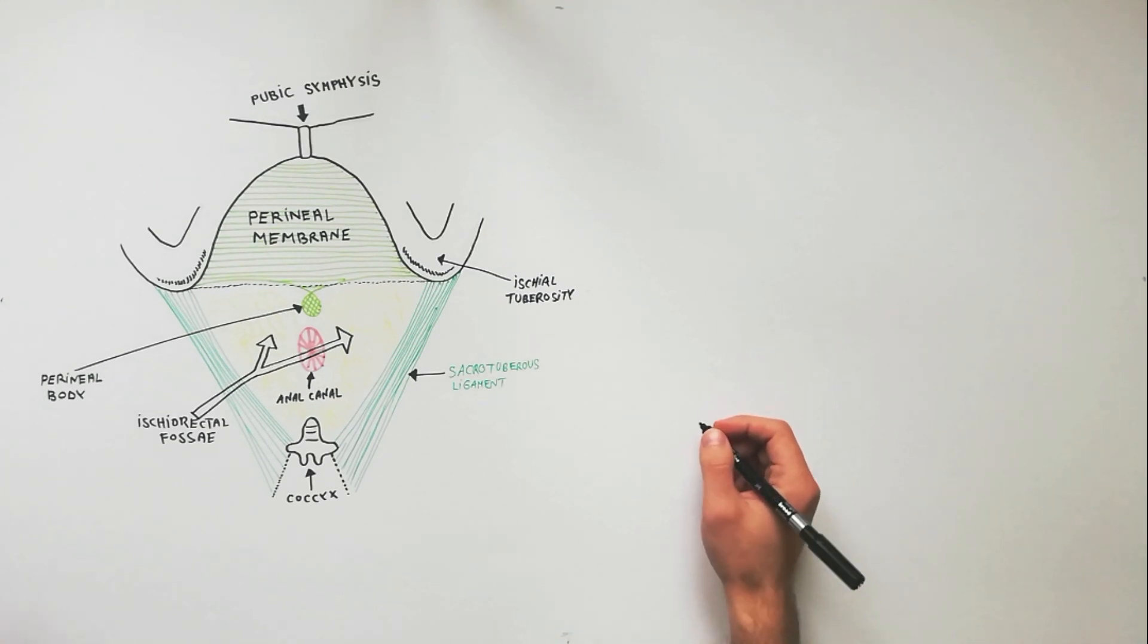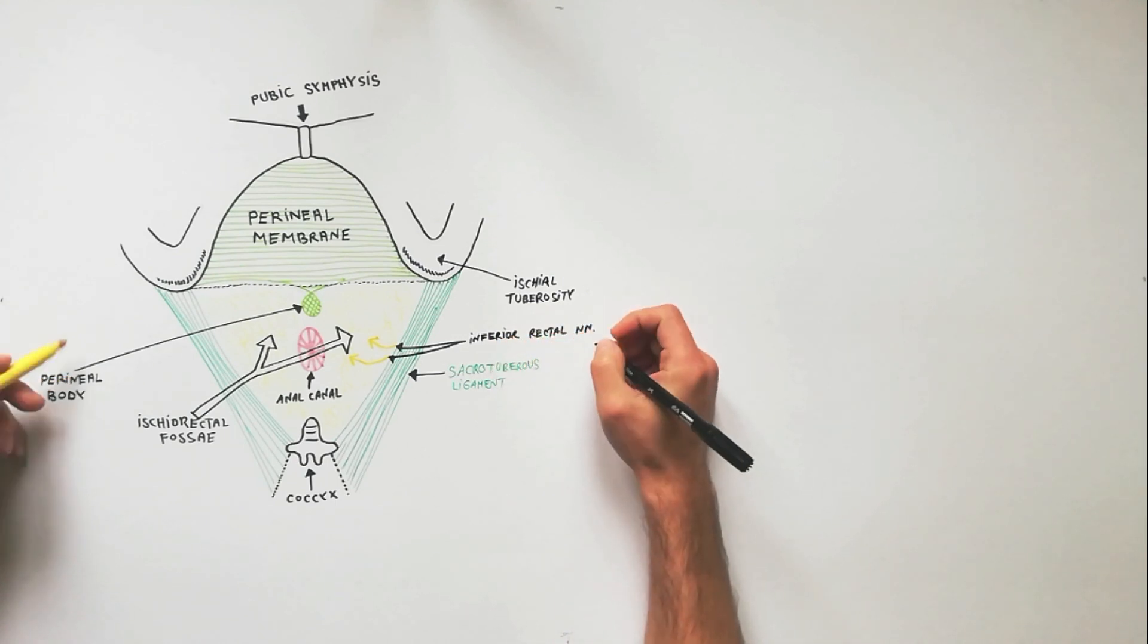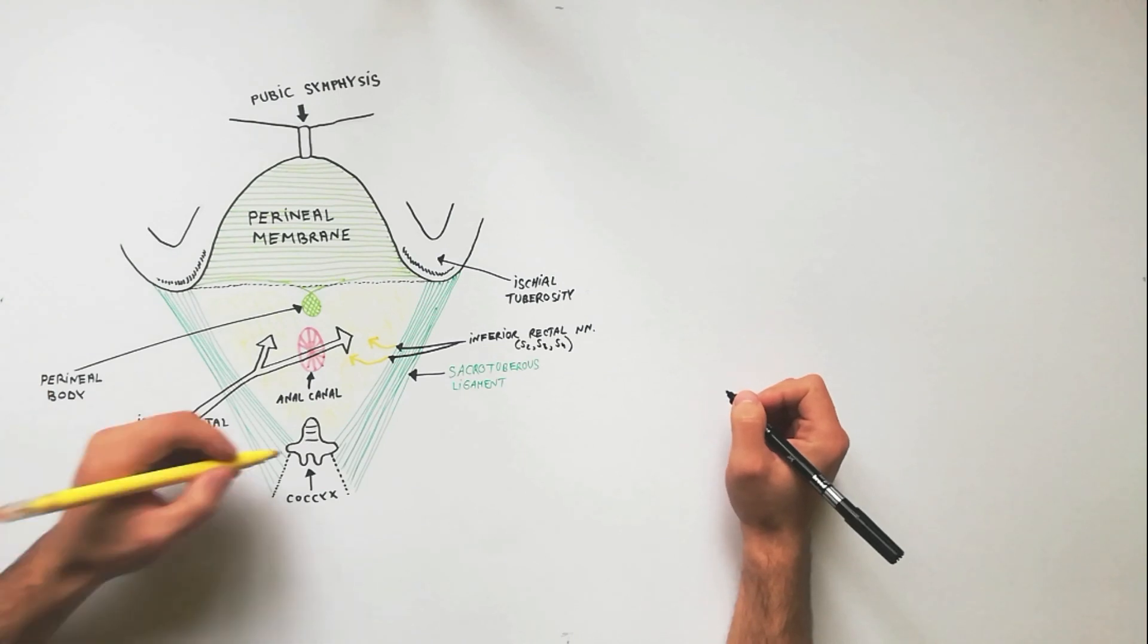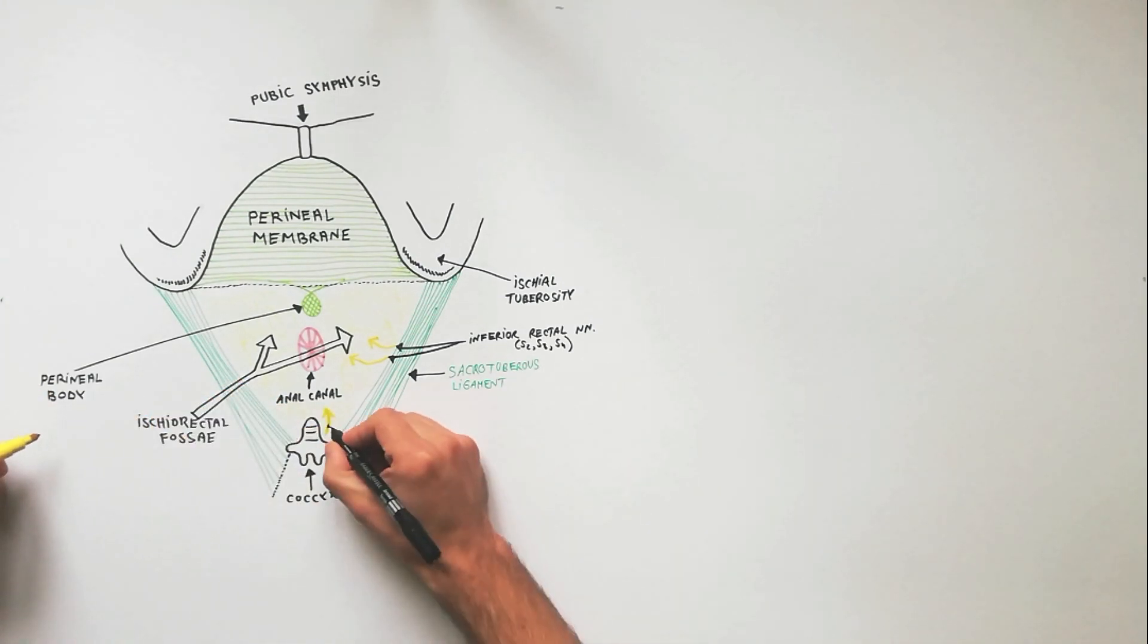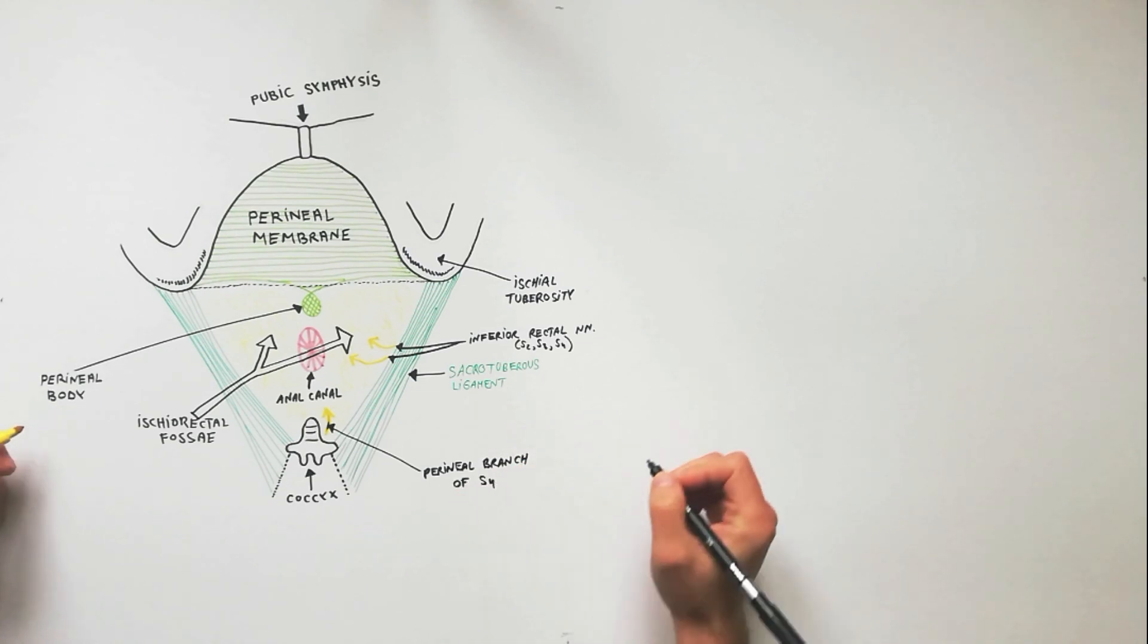The cutaneous innervation of the anal region is provided by the following nerves. The inferior rectal nerves supply the skin around the anus and over the ischiorectal fossae. The perineal branch of S4 nerve supplies the skin posterior to the anus.